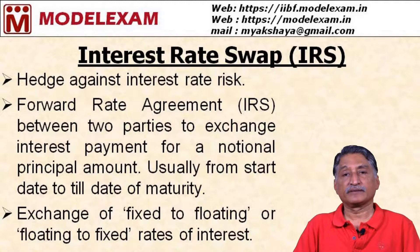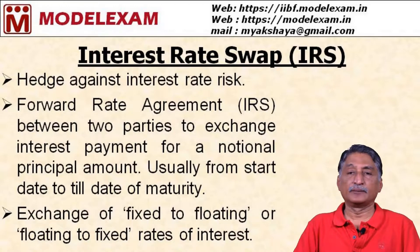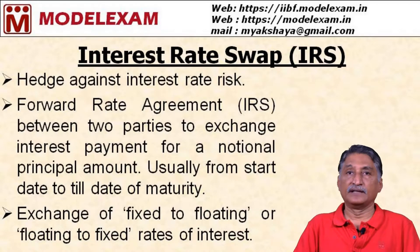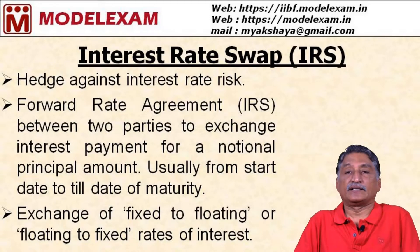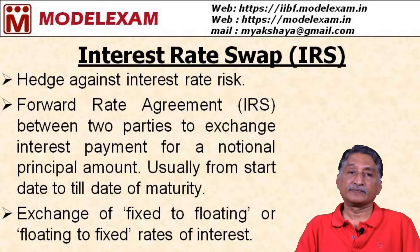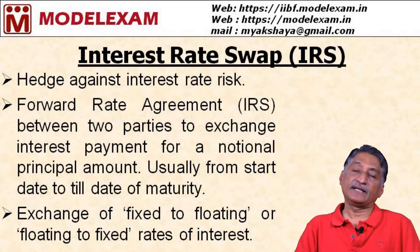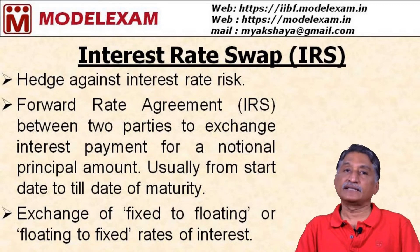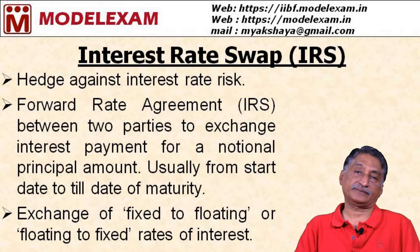In this process, what is done periodically is that whatever interest is available on the fixed rate and the agreed rate on floating, the difference is paid either by the banker or by the IRS party who has given the swap to the banker.